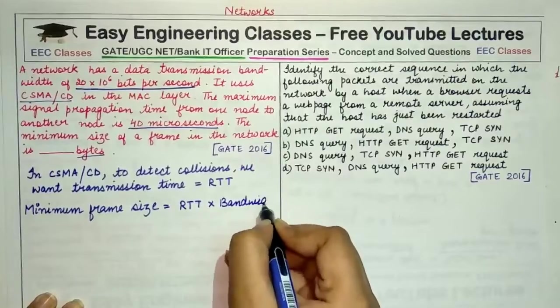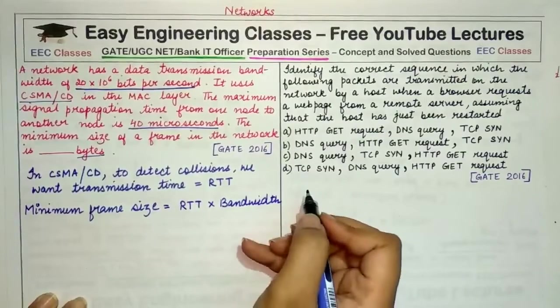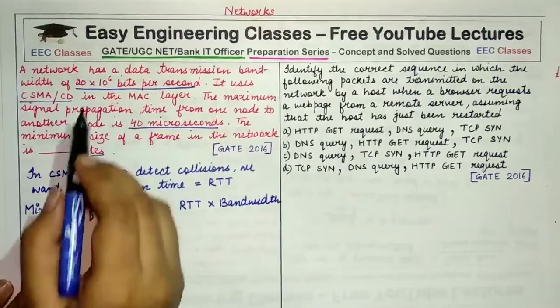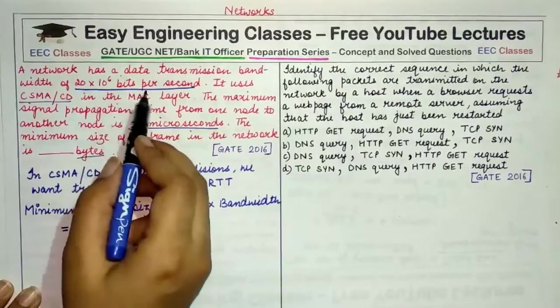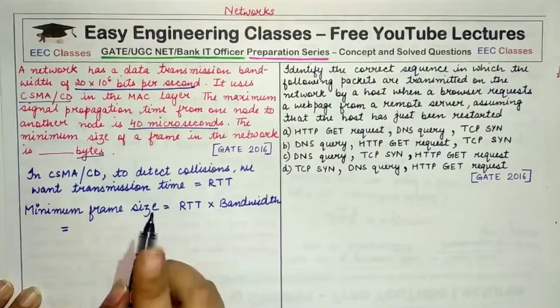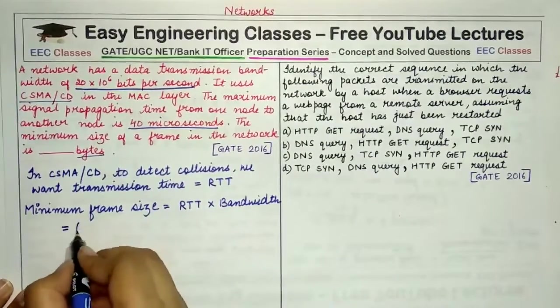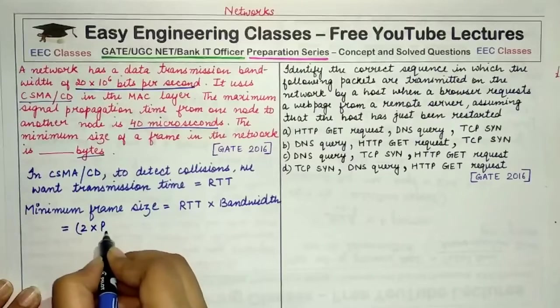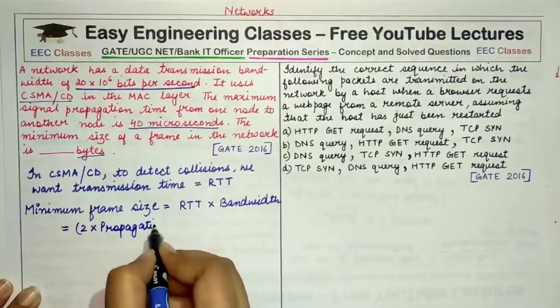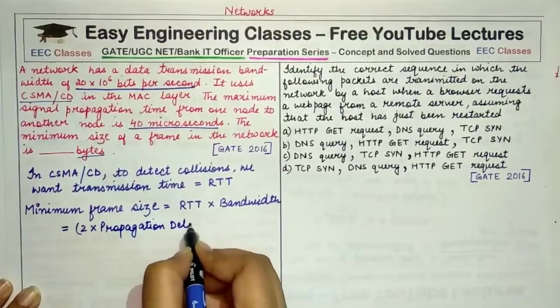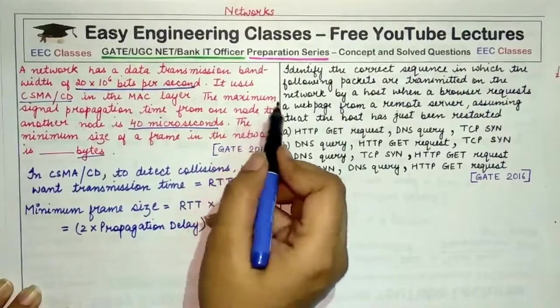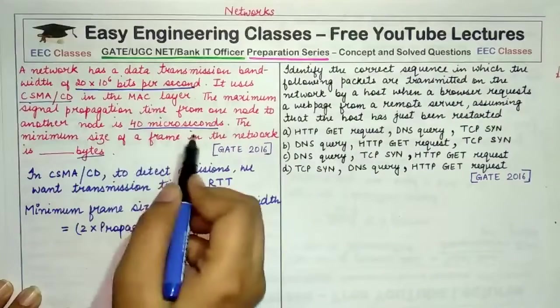So minimum frame size that is required to continuously detect collisions is the round trip time multiplied by the bandwidth - the amount of data that can be put into a channel at a time. Now bandwidth is given to you as 20×10^6 bits per second, and round trip time is equal to twice the propagation delay.